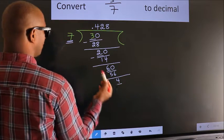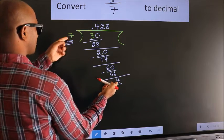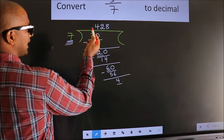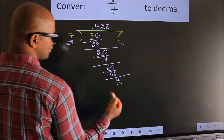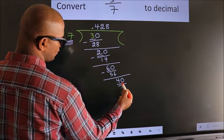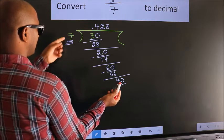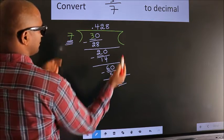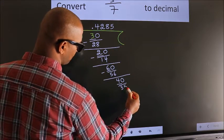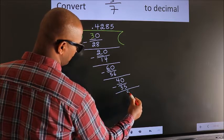Here we have 4, here 7. 4 is smaller than 7. And we already have the decimal, so we can directly take 0 — so 40. A number close to 40 in the 7 table is 7 fives 35. Now we subtract. We get 5.